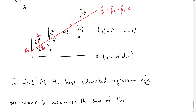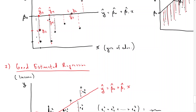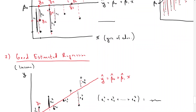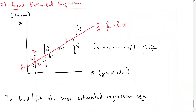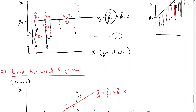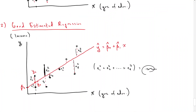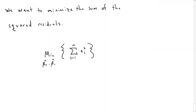We add up those residuals for a given line — that's going to give us some number — and we do that for each candidate line. We're finding a beta 0 for the intercept of our line and a beta 1 for the slope of our line, and we're going to choose a beta 0 and beta 1 to minimize this sum. So what we're doing is minimizing over beta 0 and beta 1 — we're choosing them to minimize the sum of squared residuals.